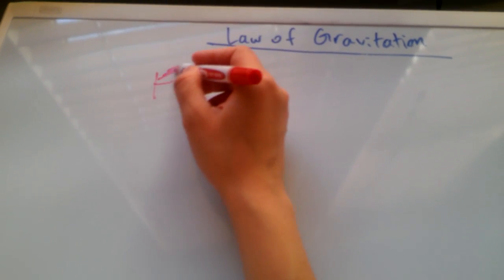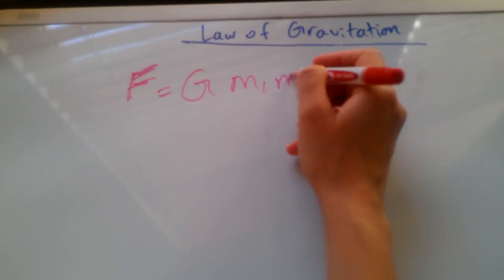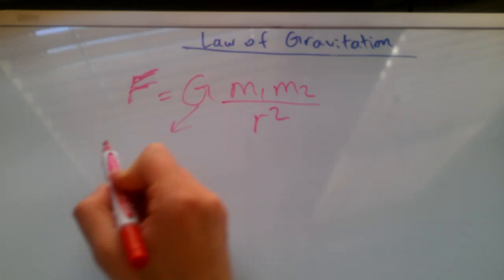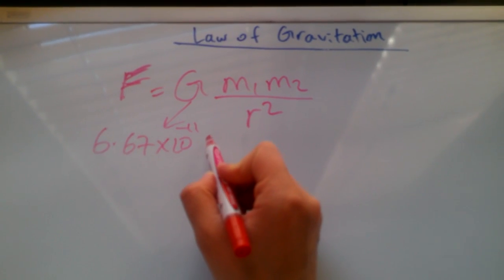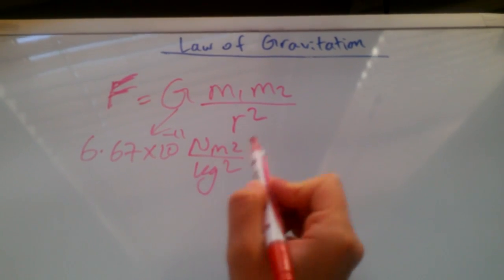The gravitational force has this form, where G is a constant of 6.67 times 10 to the negative 11 with units of newtons meters squared over kilograms squared.